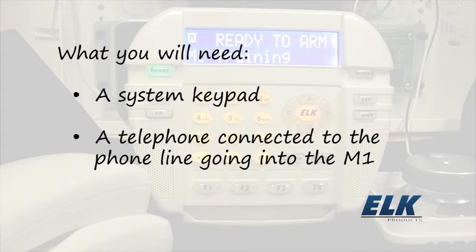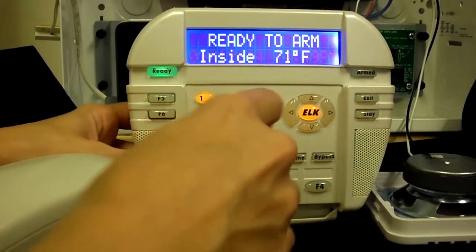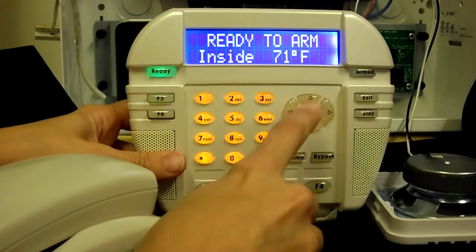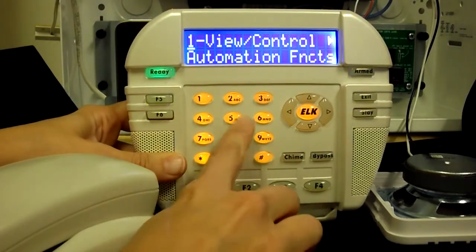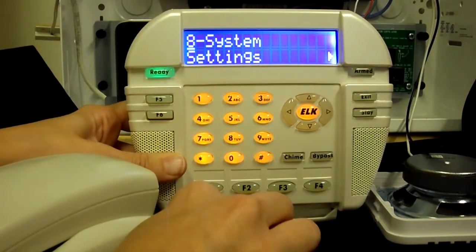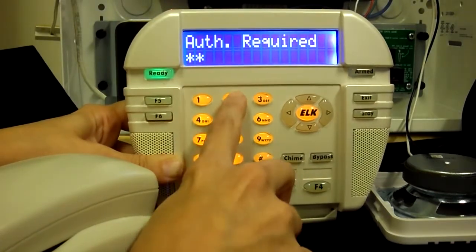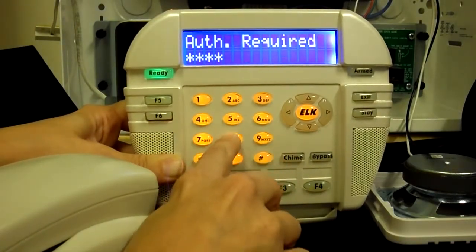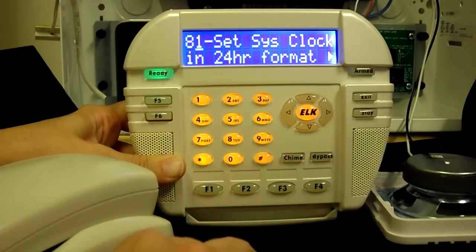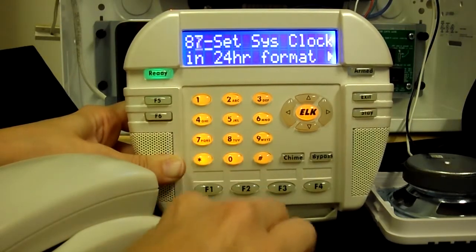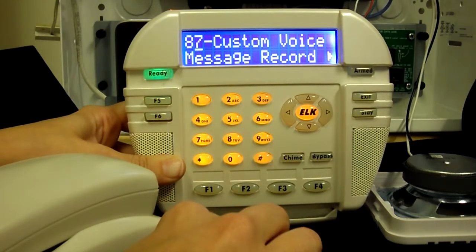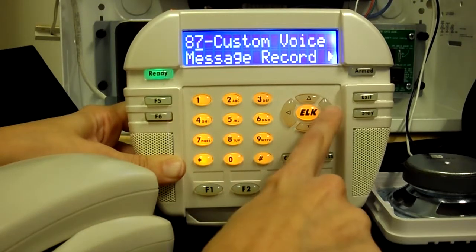To record a custom message you must access the system settings menu in the keypad. Press the ELK key, then press 8. Press the right arrow key and enter a master user or installer code when prompted. Next, press 7 to access the custom voice message record menu, then press the right arrow key to go into this menu.